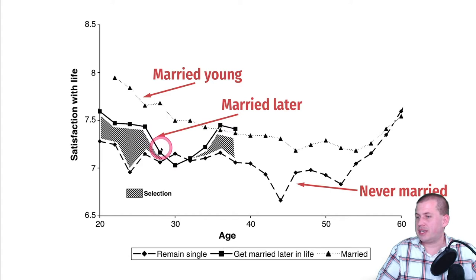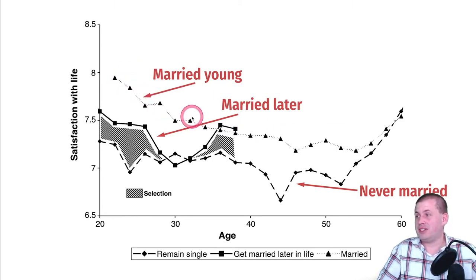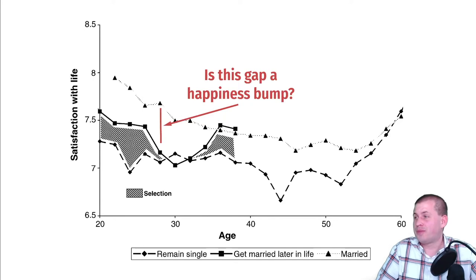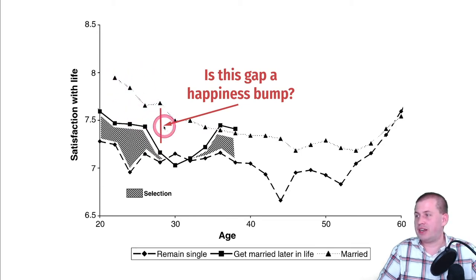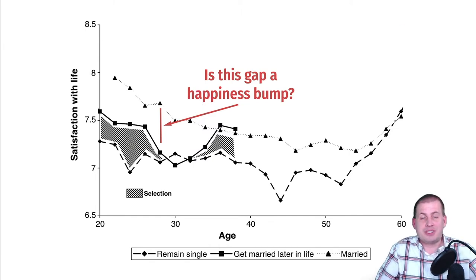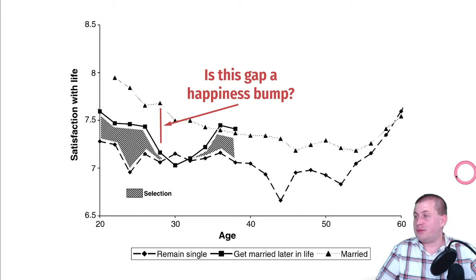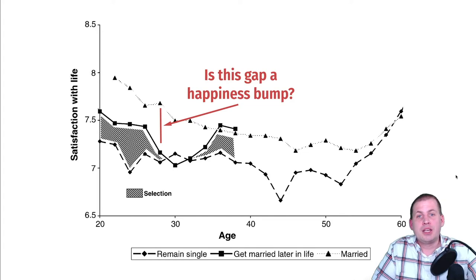Looking at the trends: the upper trend shows people who married young, the middle shows those who married later, and the bottom shows those who never married. If you just look at this initially, people who marry young appear happiest. People who marry later seem sad and then get happy. People who never marry have lower life satisfaction overall. The key question is whether getting married eliminates that gap — specifically, does getting married later in life erase the happiness gap?